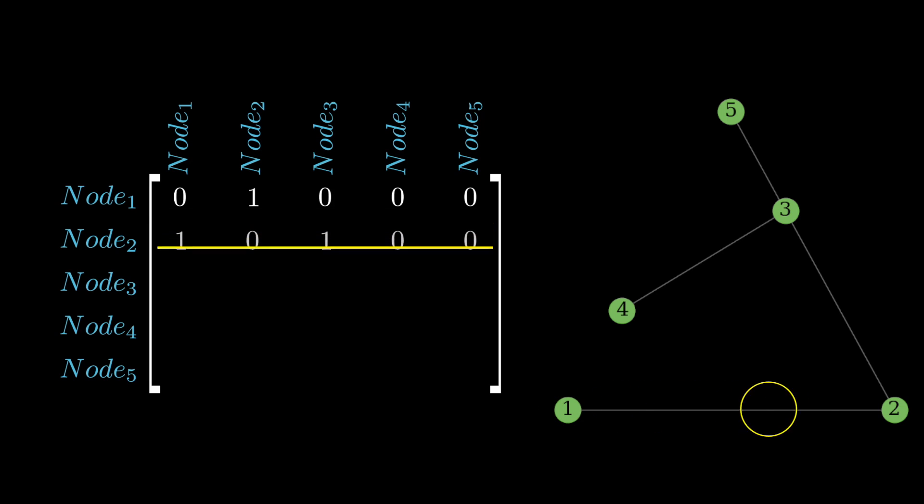In the next row, we'll do the same for node 2. It connects to nodes 1 and 3, so we'll put a 1 in the first and third columns, and 0s everywhere else. The next row is for node 3, and has 1s in columns 2, 4, and 5. And then the remaining two rows only have a connection to node 3, and therefore a 1 is only in the third column.